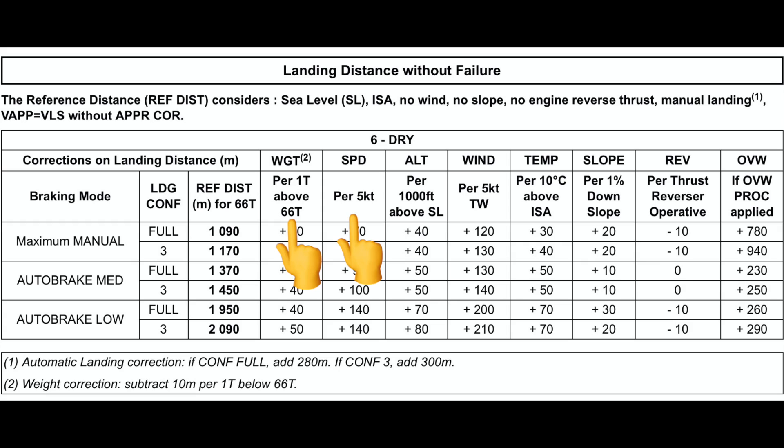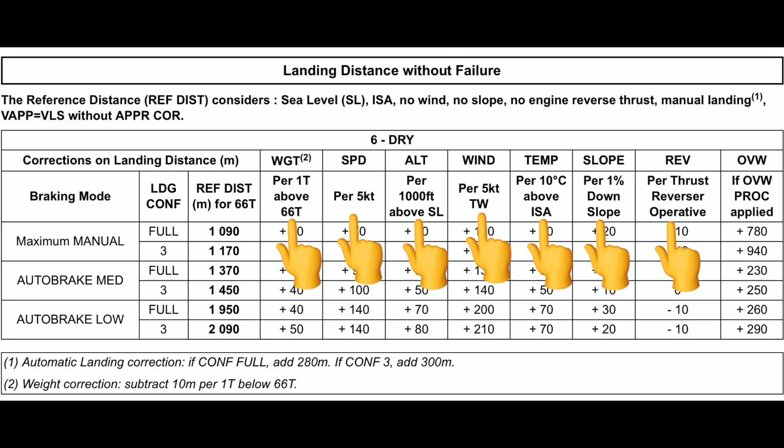The remaining tables are for corrections for weight, speed, altitude, wind, temperature, slope, thrust reversers, and overweight landing. We will apply all of these corrections and calculate how much distance is required to stop the aircraft on the runway using flaps 3 and using flaps full. We will then compare these calculated required distances with what is available at Ranchi and Imphal.